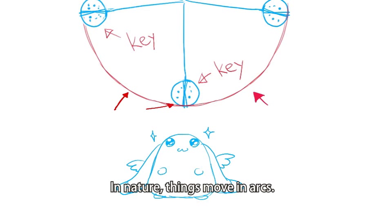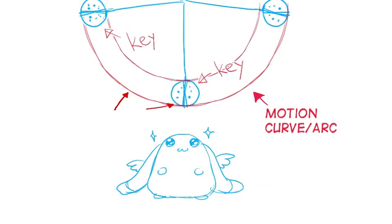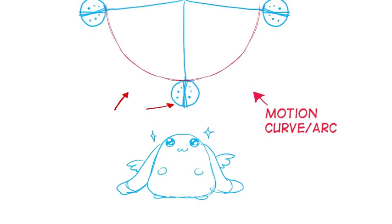In nature, things that are moving in motion are moving in arcs. And in animation, we call it the motion arcs. For animators, we use the motion arc to guide where things move. See the red curvy lines I have drawn on the screen? That's the motion arc we will use for the pendulum swing.